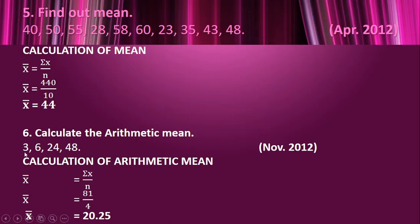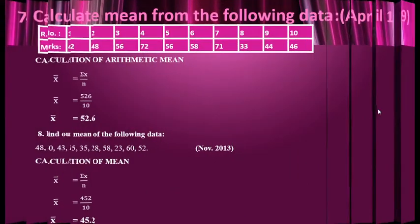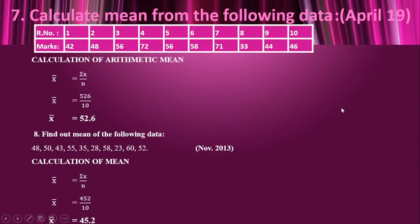Here we are given 4 values, so σx is 81 and n is 4. So x̄ is 20.25.